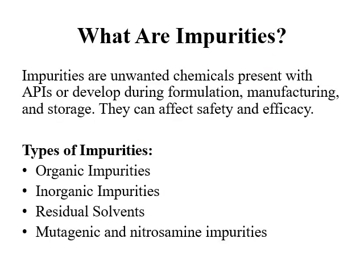Impurities are unwanted chemicals or materials present in APIs or in the formulation, which are not the API, not the excipient, or not part of the intended composition. The impurities may develop during formulation manufacturing and during storage. They affect the safety and efficacy of the formulation and are closely related to product quality. Impurities may be process-related or degradation-related.